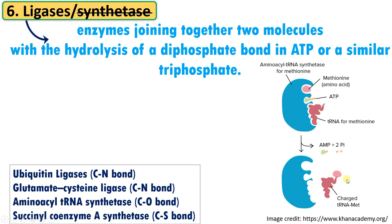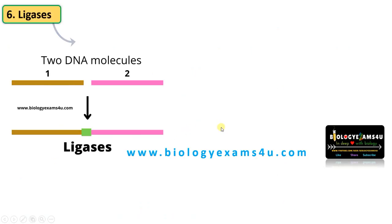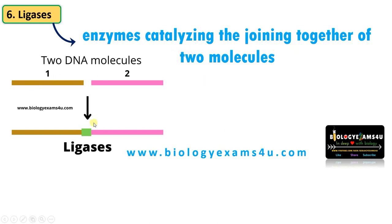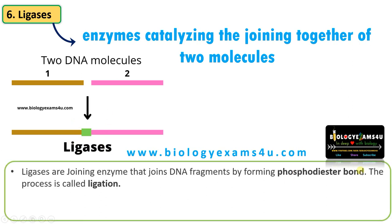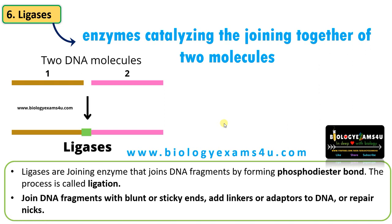So this is a ligase reaction. Another example: cysteine and glutamate are combined in the presence of glutamate-cysteine ligase, forming glutamylcysteine, which is the first step in the synthesis of the antioxidant glutathione. And finally, the classical example is DNA ligase. Two DNA fragments are joined by ligase through the formation of a phosphodiester bond — this process is called ligation, widely used in recombinant DNA technology for making sticky ends, adding linkers or adapters to DNA, or repairing nicks.